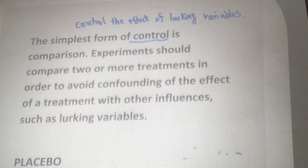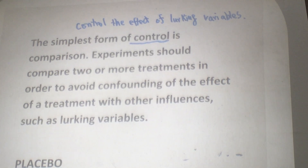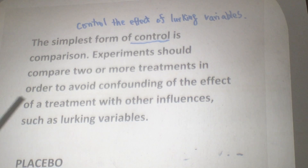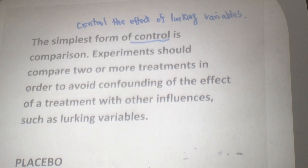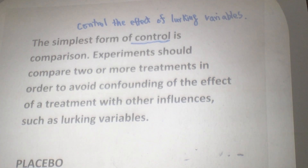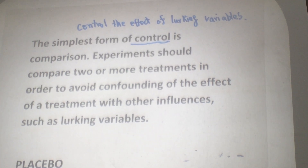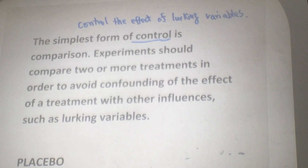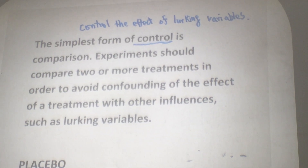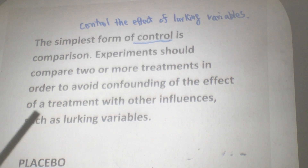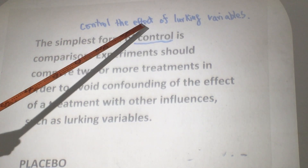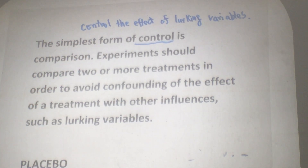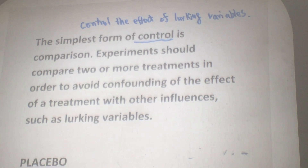In our case, what is the lurking variable? Temperature change. If you have only one group, even you see a significant weight loss, you are not sure the weight loss is because of the drug. It may come from the effect of temperature change. So you don't know if it's the effect of the drug or from another lurking variable. So that's why you need to make a comparison.